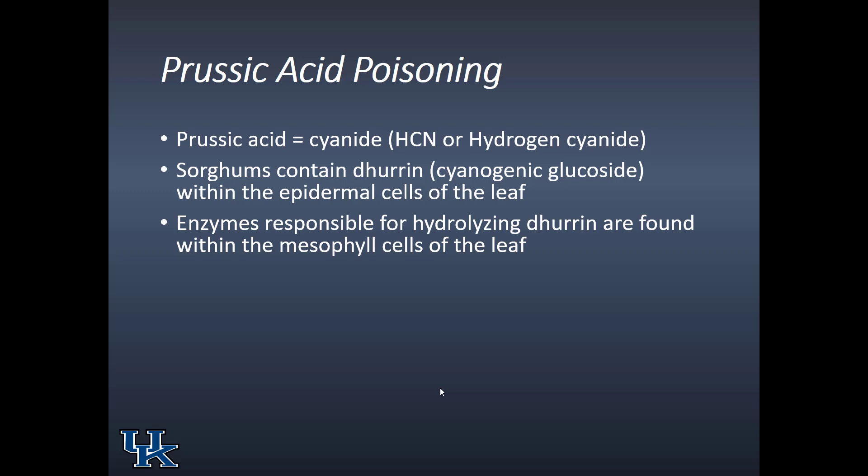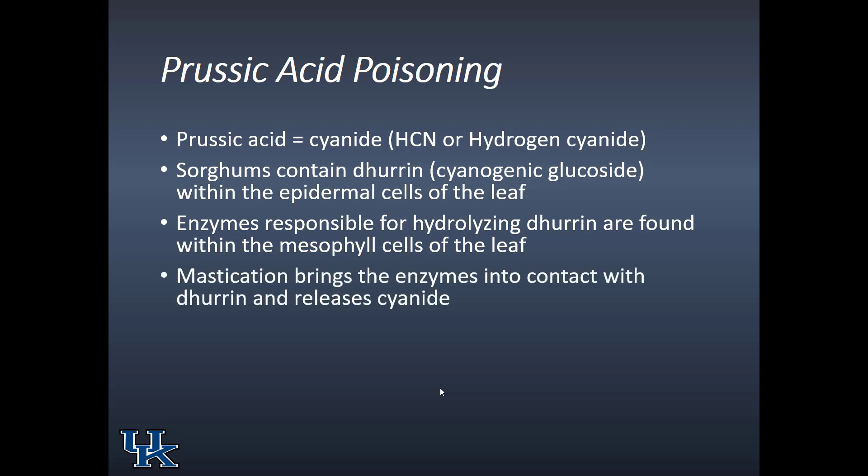Enzymes responsible for hydrolyzing dhurrin into the sugar part and the cyanide part are found within the mesophyll cells of the leaf. So an ordinary intact leaf has the potential to make prussic acid, but will not do so as long as it is intact. When we chew or masticate those leaves, it brings the enzymes into contact with dhurrin and releases cyanide. Like nitrate poisoning, the rumen environment can make this worse by acting directly on the dhurrin to further release cyanide.